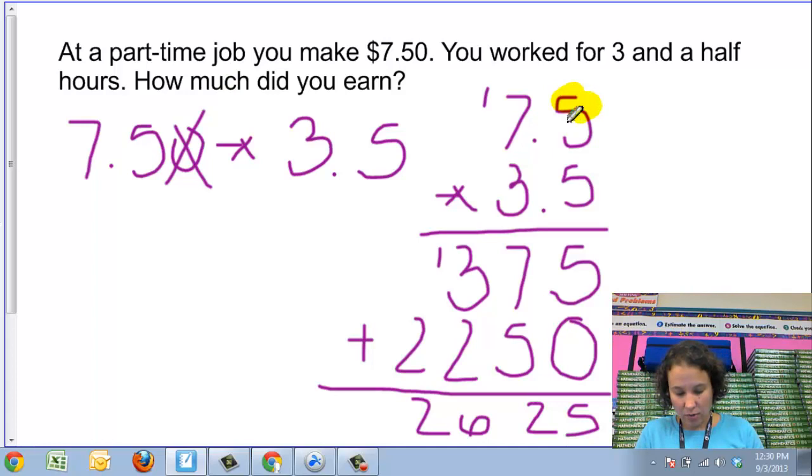I'm going to count how many numbers in total do I have after the decimal point, including in both numbers. In this case, I have two fives after the decimal point. So I need to include two numbers after the decimal point in my answer, which means that my decimal goes right here.